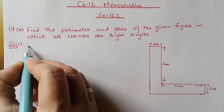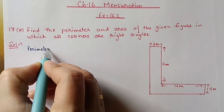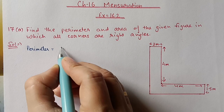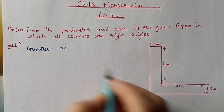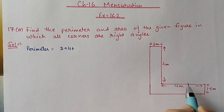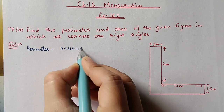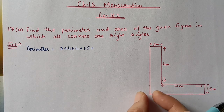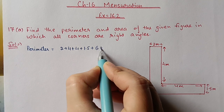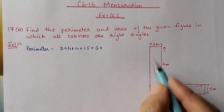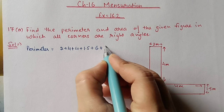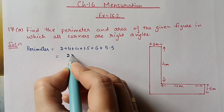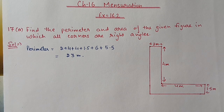First we will calculate the perimeter by measuring the boundary. Starting from one point: from this point to this point is 2 meters, then from here to here is 4 meters, then again 4 meters, then 1.5 meters. This side is 4 plus 2, which gives 6 meters. Then this side is 4 plus 1.5, which is 5.5. After adding all sides, we are getting 23 meters.